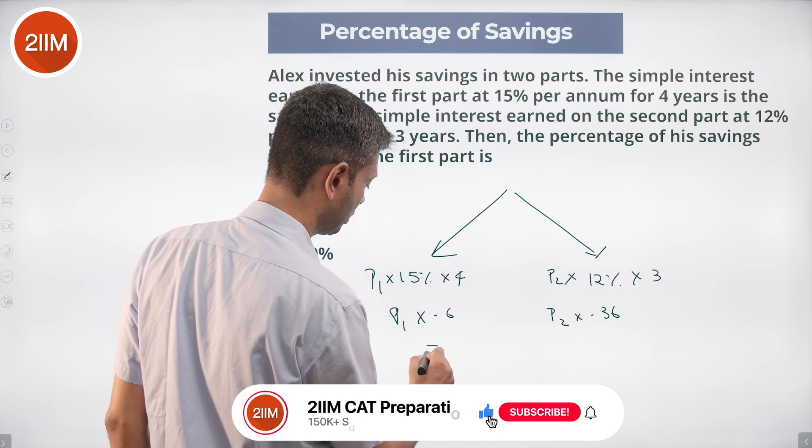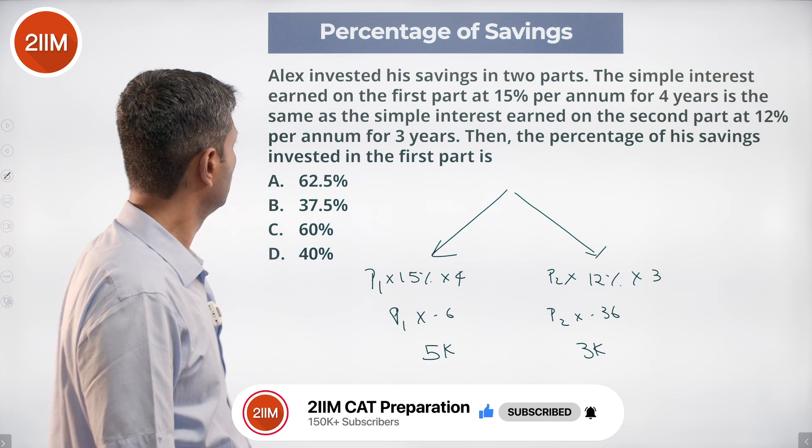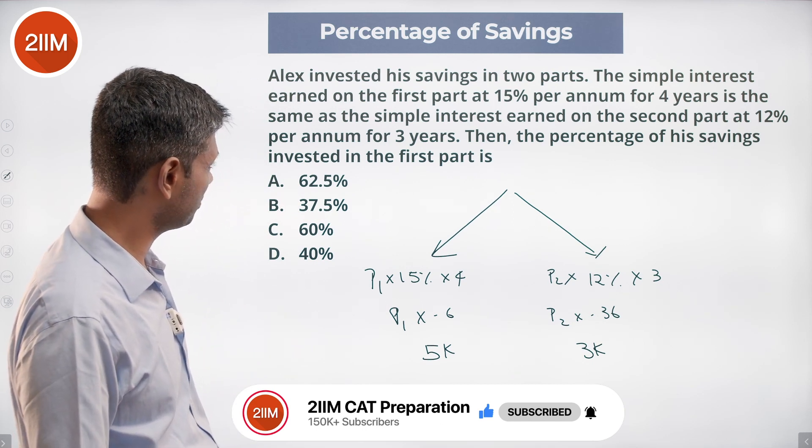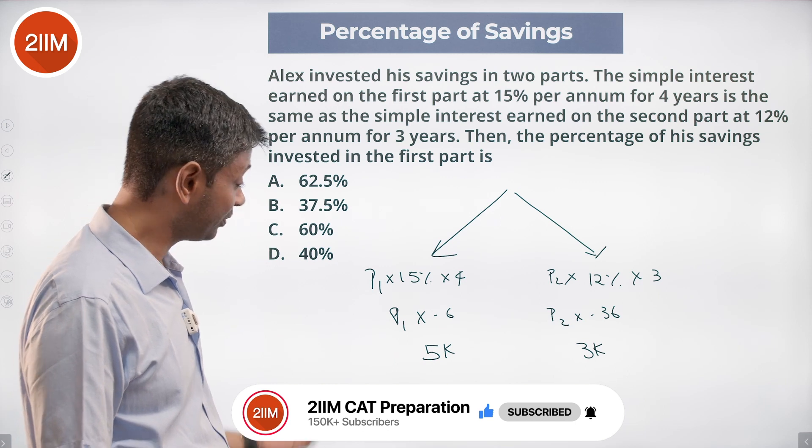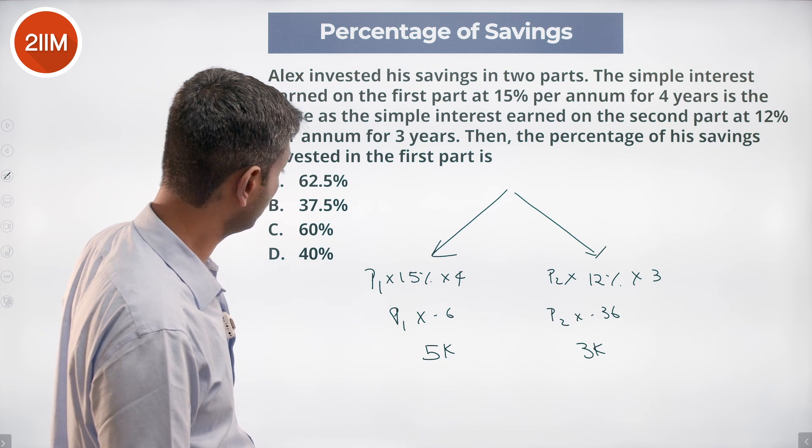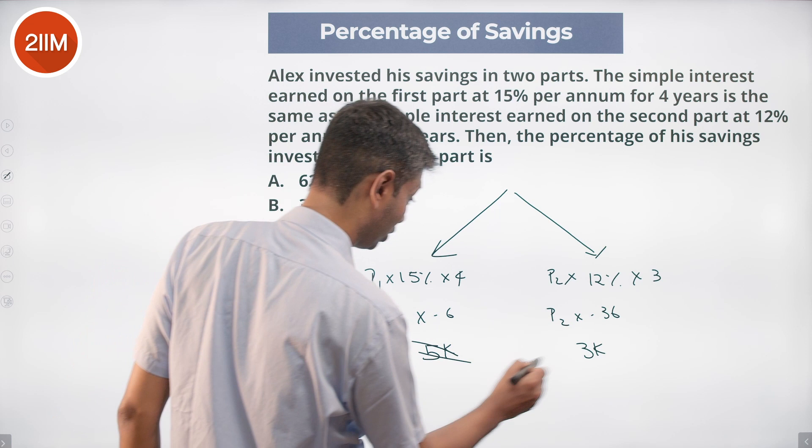Principles is 5 is to 3, 5k and 3k. Then the percentage of savings invested in the first part... wait, the ratio is 5 is to 3. Sorry, P1 into 0.6 equals P2 into 0.36, so it's not 5 is to 3.